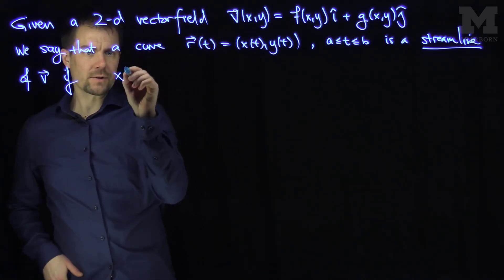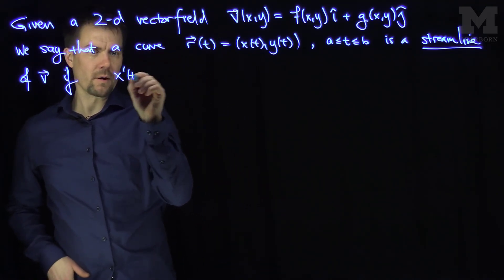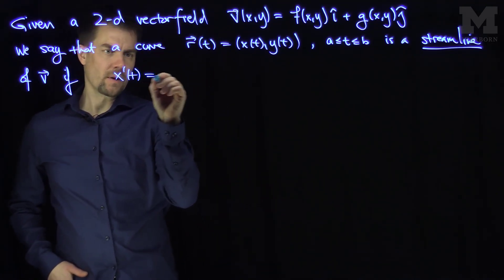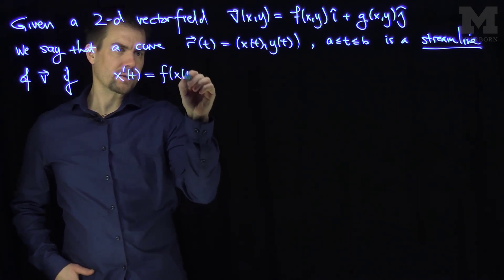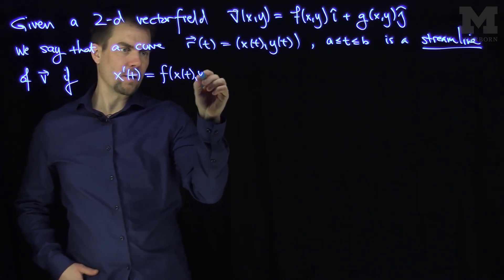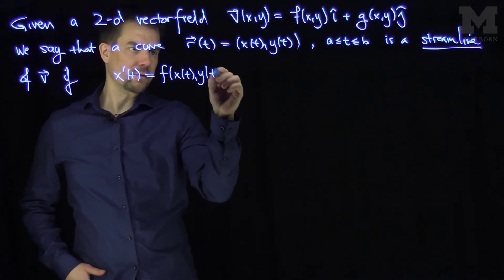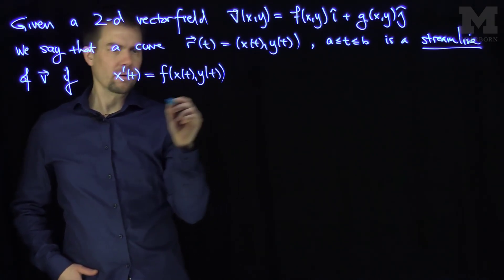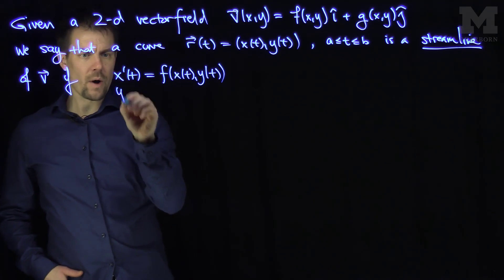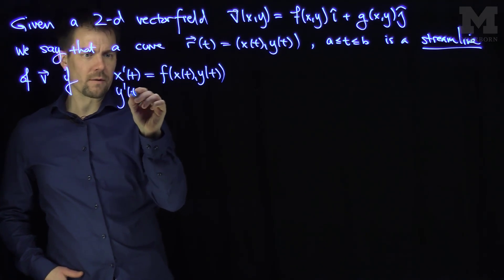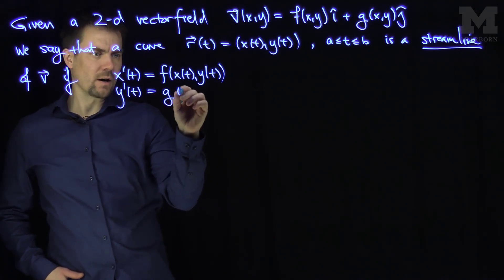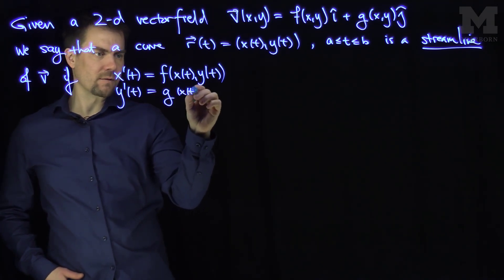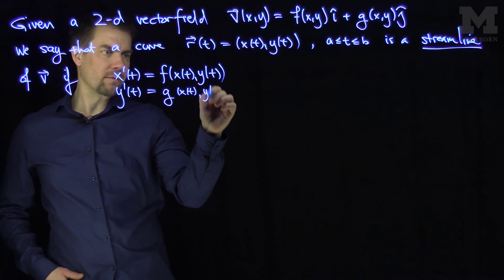The conditions are: x prime of t equals f evaluated at (x(t), y(t)), and y prime of t equals g evaluated at (x(t), y(t)).